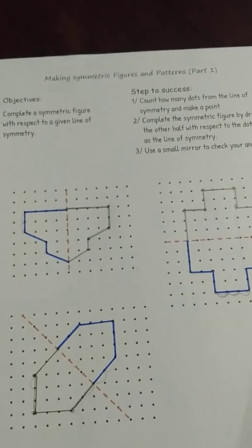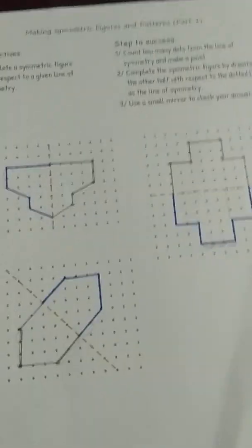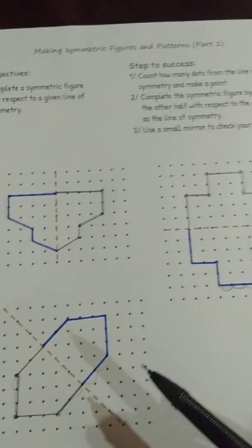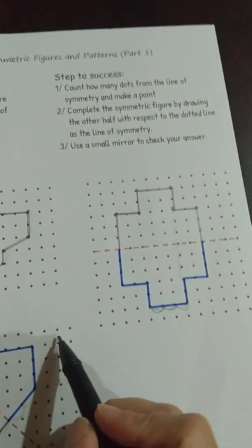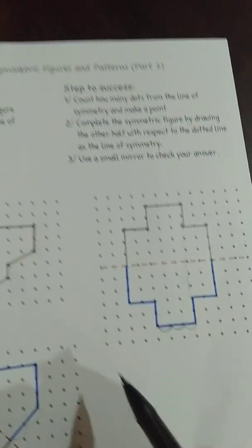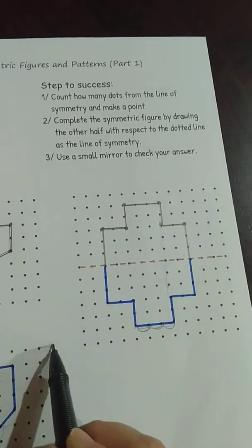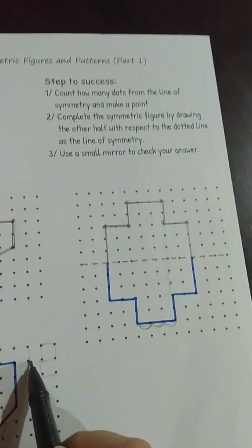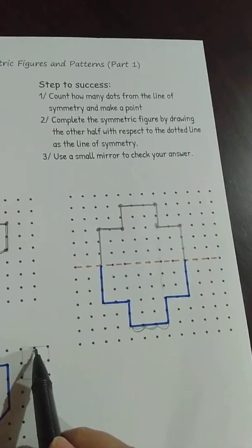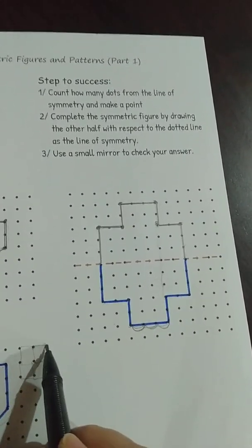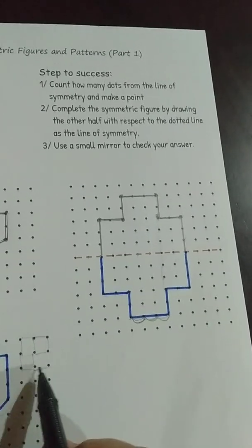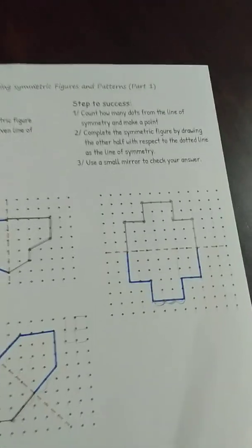Good luck for you to try on your exercise later. Now, if you don't have any dot paper, you can use your square book or square paper. The square is like this. So you just use the end of the square to be the point — either the big square or the small square. Good luck, do your best.